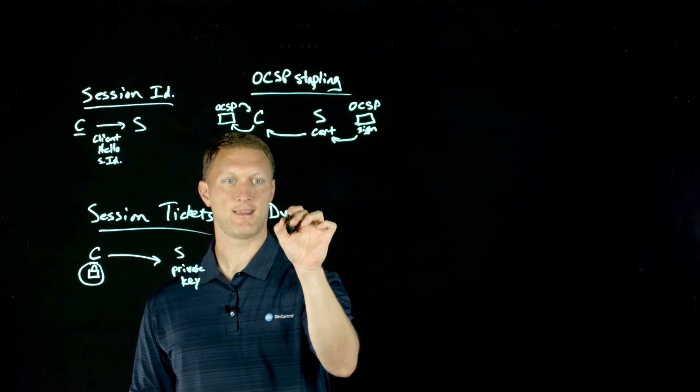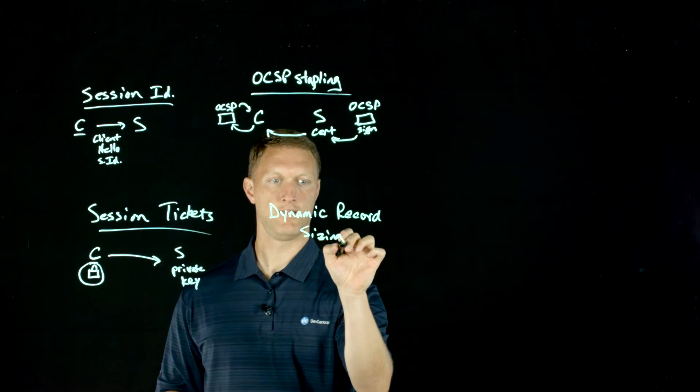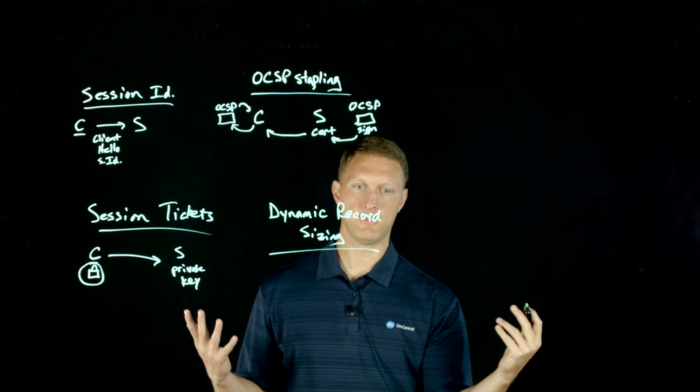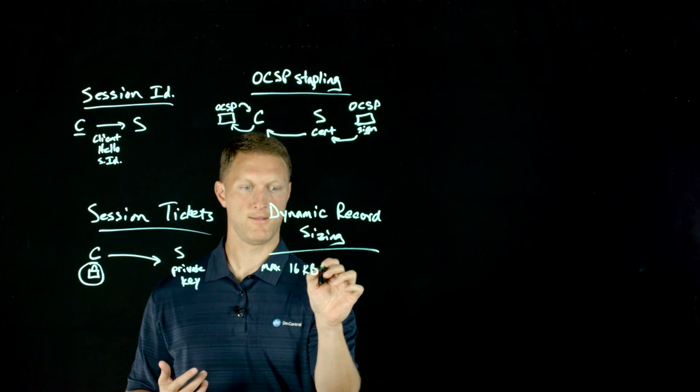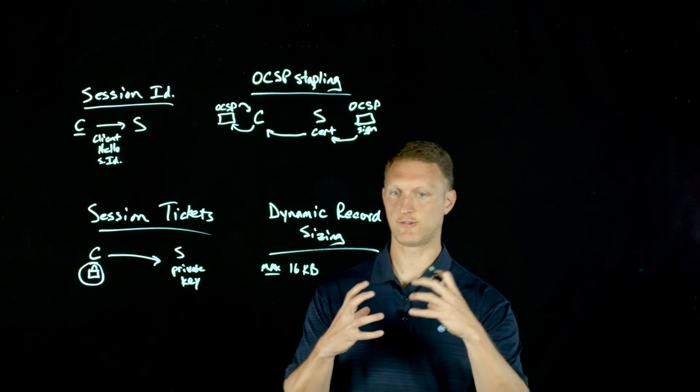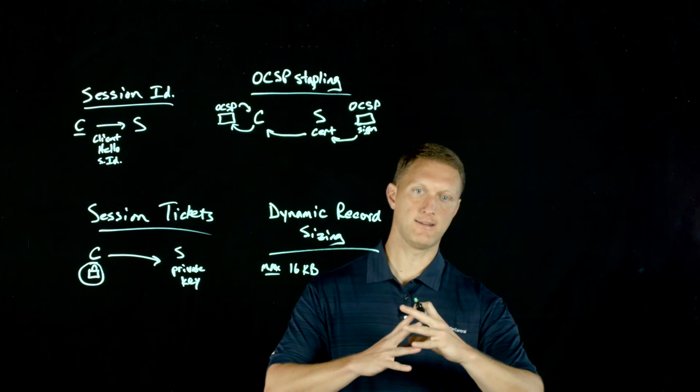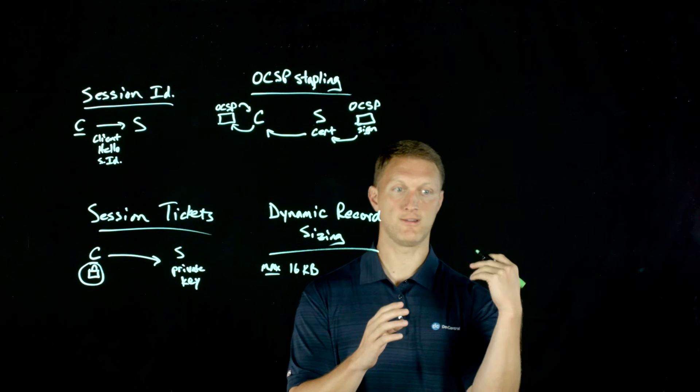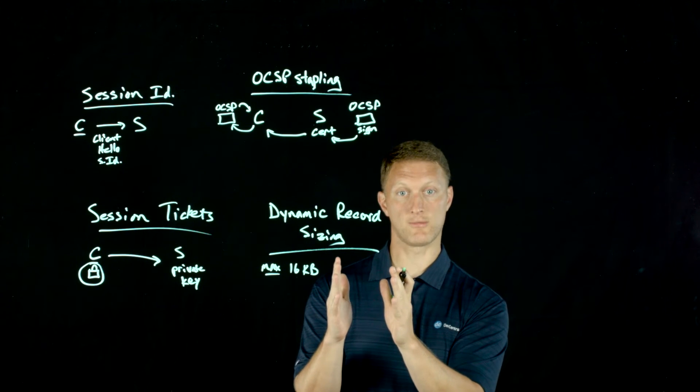The next one I'll talk about is dynamic record sizing. When the TLS communication happens, it happens via a record protocol. And the reality is that there is a max record size for TLS of 16 kilobytes. And the word max here is important because if you can imagine for certain interactive transactions, there may be some initial communication that happens between the client and the server that doesn't need the entire huge record that could be used. And so maybe a smaller record to increase like buffering and avoid some other problems that could happen if you use these huge records on those initial parts of the communication. You should have a smaller record size for those initial transactions.